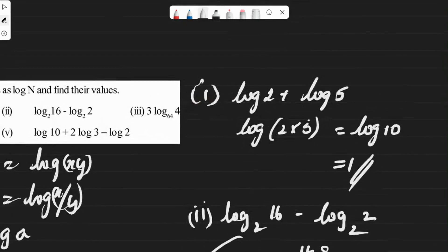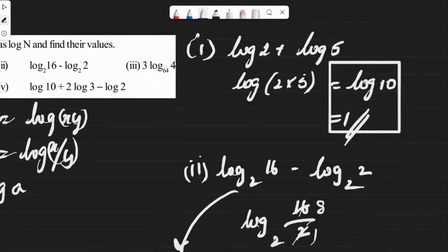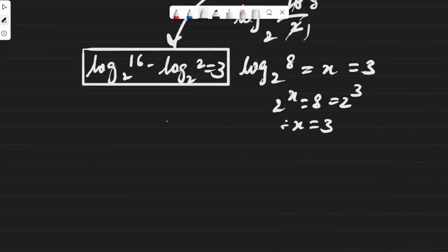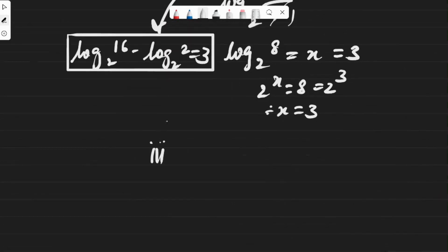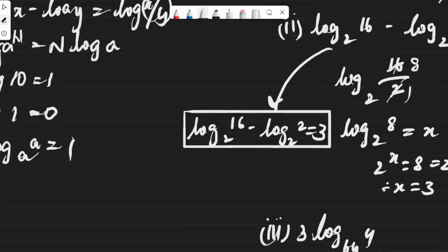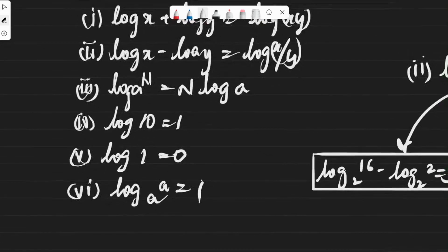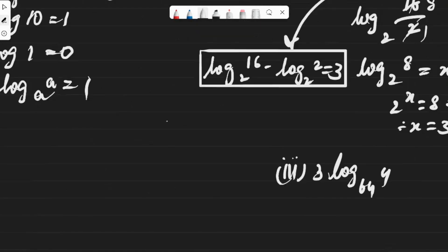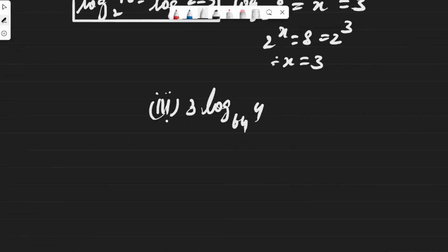The third question: 3 log 4 base 64. Using the third formula, log(a to the power n) equals n log a, we can reverse this: n log a equals log(a to the power n). So 3 log 4 base 64 becomes log(4 cubed) base 64.